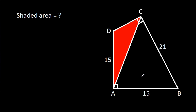In this video, we have been given that AB is 15, AD is 15, and BC is 21, and angle BAD is 90 degrees, and angle BCD is 90 degrees. We have to find the shaded area.